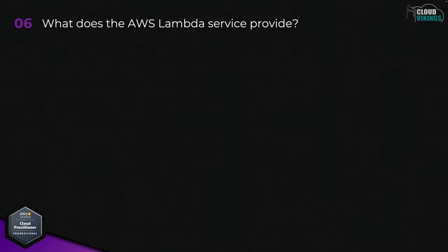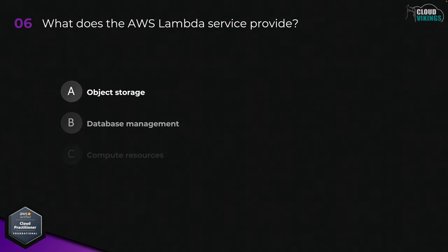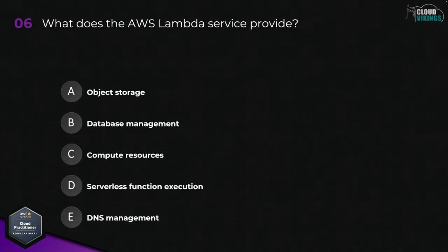Question six: what does the AWS Lambda service provide? Options are: A, object storage; B, database management; C, compute resources; D, serverless function execution; or E, DNS management. The correct answer would be D, serverless function execution.